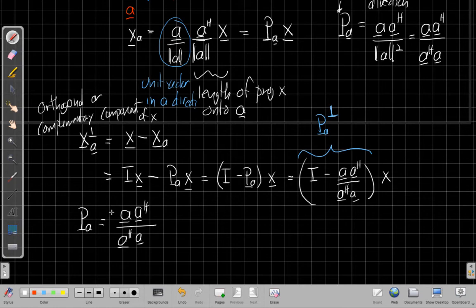So just to write that out in its own right, we have the projection matrix piece of A is A, A Hermitian divided by A Hermitian A, so the outer product of A divided by the inner product. And again, this is for a single vector. The orthogonal complement then is I minus P_A, which is I minus A, A Hermitian over A Hermitian A.